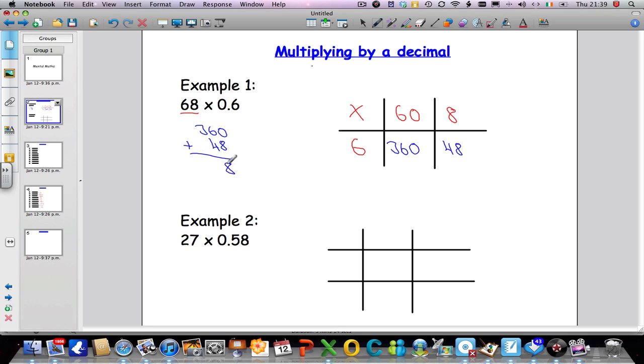So 360 plus 48, 0 and 8 is 8, 6 and 4 is 10, so put down the 0, carry the 1, 1 and 3 is 4.